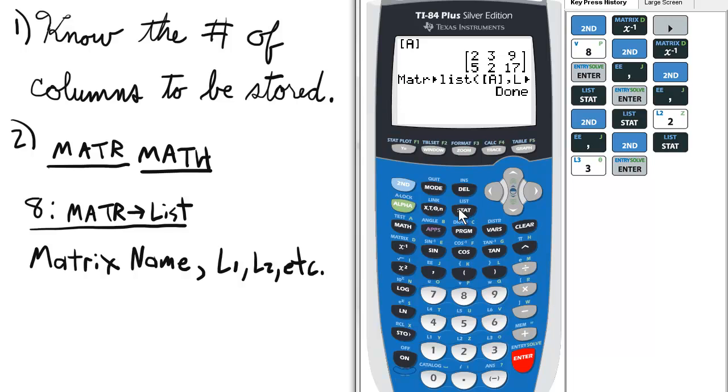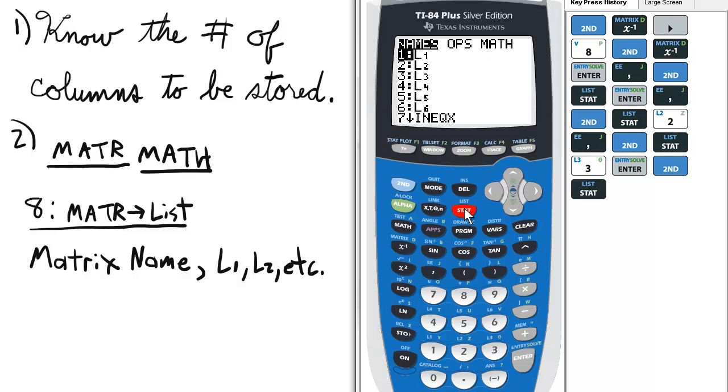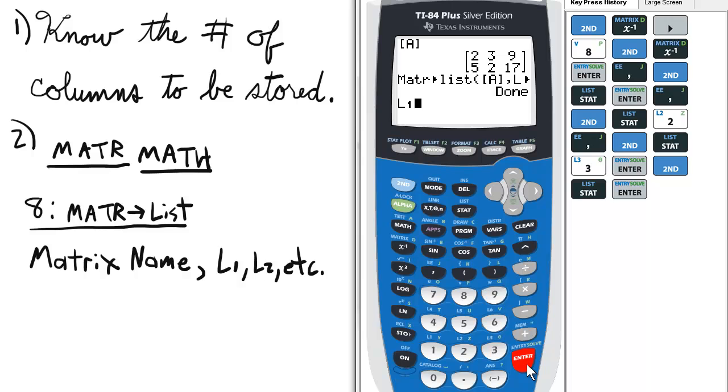Now, we can actually look at these lists. Let's check out L1, press enter, and it's 2, 5. Notice that's the first column. I believe it's going to work also for L2 and L3.